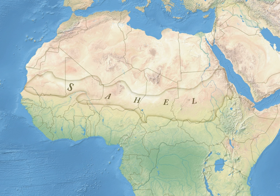The topography of the Sahel is mainly flat; most of the region lies between 200 and 400 metres in elevation. Several isolated plateaus and mountain ranges rise from the Sahel, but are designated as separate ecoregions because their flora and fauna are distinct from the surrounding lowlands. Annual rainfall varies from around 100 to 200 mm in the north of the Sahel to around 600 mm in the south.